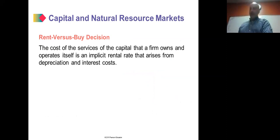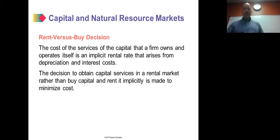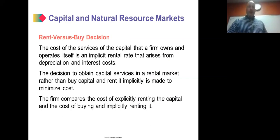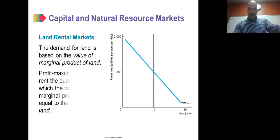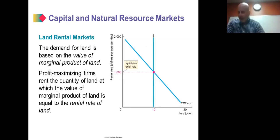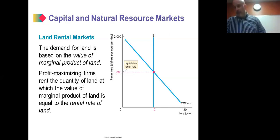When deciding whether to rent or buy capital, the decision is implicitly made to minimize cost — if it's cheaper to rent, firms will rent. Firms compare the cost of explicitly renting capital versus buying it. For a 10-acre lot, the value of marginal product determines the demand, and combined with the supply curve, the land rents for $1,000 per acre per day.